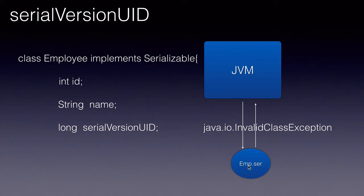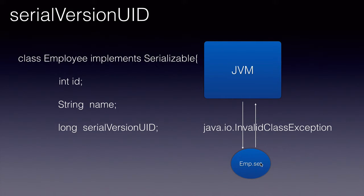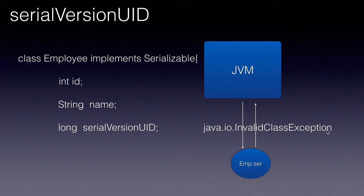So when we serialized the object, the JVM would have assigned a unique serial version UID based on the ID field. Then we added a name field and loaded that class into memory, so the JVM calculates another serial version UID. When it deserializes emp.ser back, it is not the same serial version UID — if it calculates based on ID it's one value, if it calculates based on ID and name it's a different value. That is the reason you see a java.io.InvalidClassException.